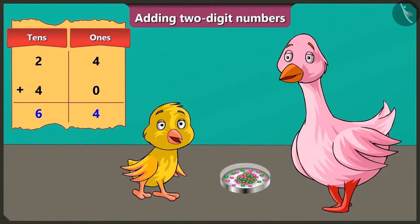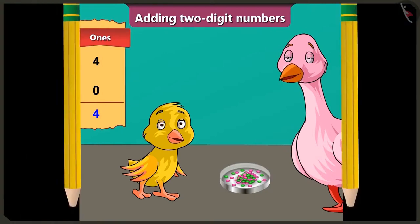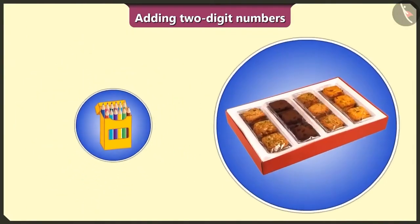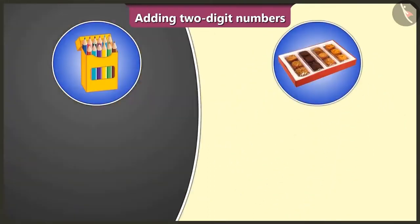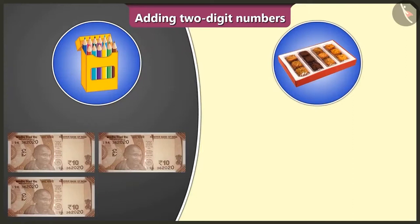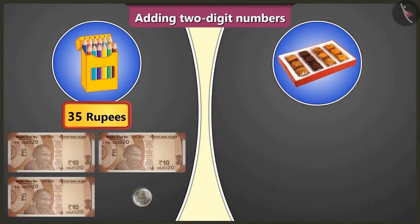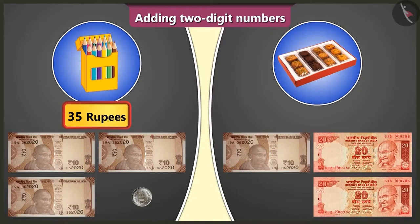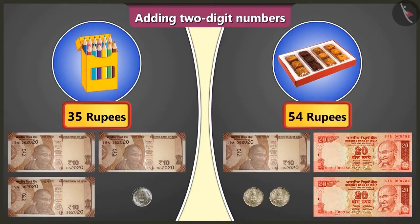Wow, Auntie — here we have a total of 64 gems, which is more than 40 gems. So now I can not only have 2, but more than 2 gems every day. Okay. So let us see some more examples. Look here, Pillu — this is a color pencil box and this is a cookie box. I bought this color pencil box by giving 3 notes of Rs. 10 and 1 coin of Rs. 5, which means it costs Rs. 35.